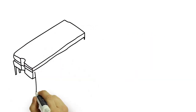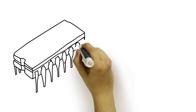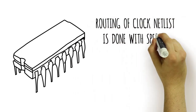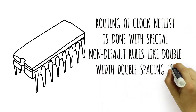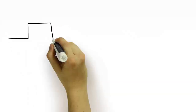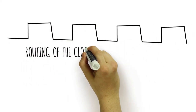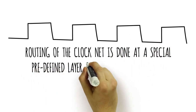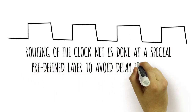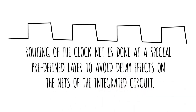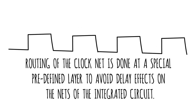Secondly, it helps avoid the low noise effect with clock net routing. Routing of clock nets is done with special non-default rules like double-width and double-spacing in the integrated circuit to avoid the crosstalk noise effect for the signal. Routing of the clock net is done at a special predefined layer to avoid the delay effect on the nets of the integrated circuit.